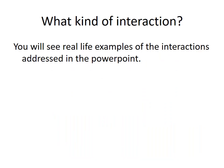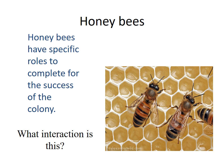Now we're going to look at some pictures and you'll have a moment to guess which interaction is occurring. This first one is cooperation — the bees are working together for the same purpose, to make sure the colony is strong.